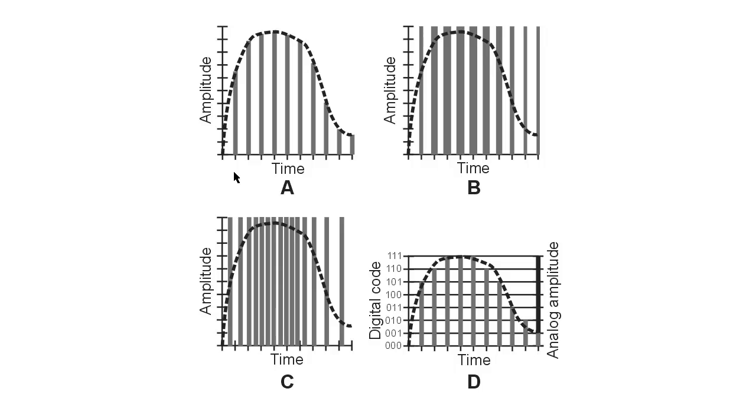This particular type right here is pulse amplitude modulation. The pulses, these gray lines, are all the same width, but their amplitude varies according to the instantaneous amplitude of the signal modulating waveform. This is called positive pulse amplitude modulation, or PAM.